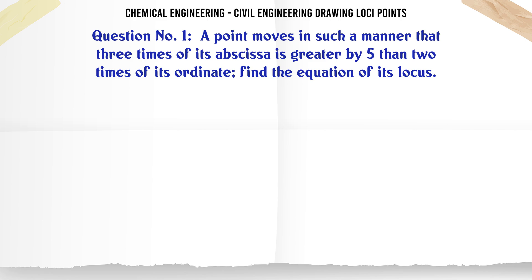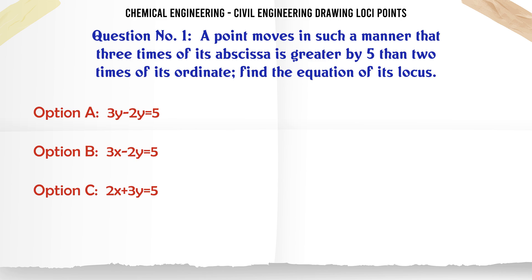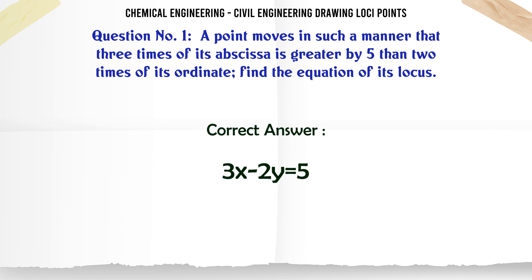A point moves in such a manner that 3 times of its abscissa is greater by 5 than 2 times of its ordinate. Find the equation of its locus. Options: a) 3y-2y=5, b) 3x-2y=5, c) 2x-3y=5, d) 2x+3y=5. The correct answer is 3x-2y=5.